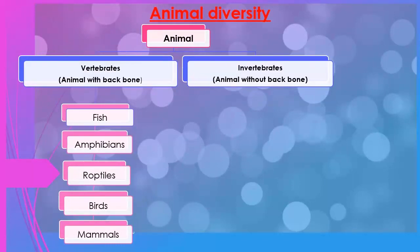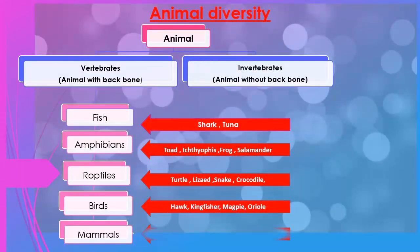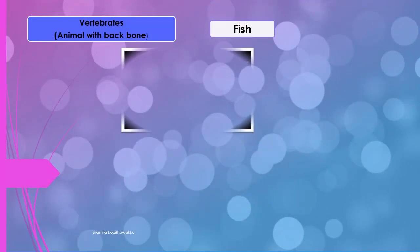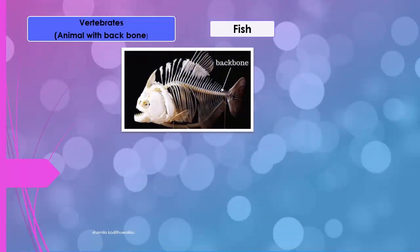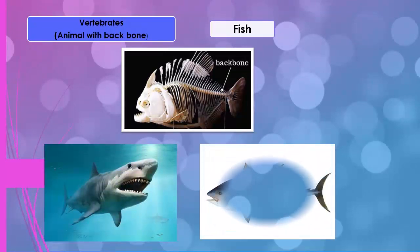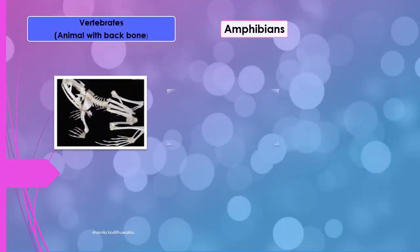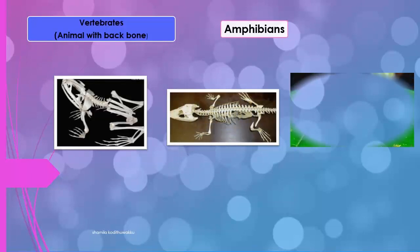Invertebrates are animals without a backbone. Vertebrates can again be divided into five groups. The first group is fish, for example shark and tuna.